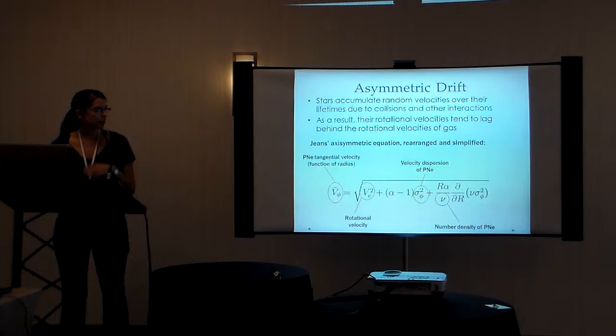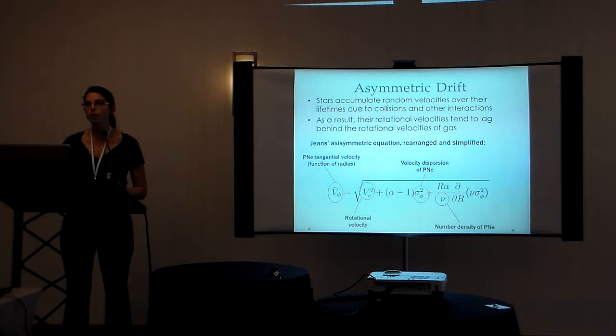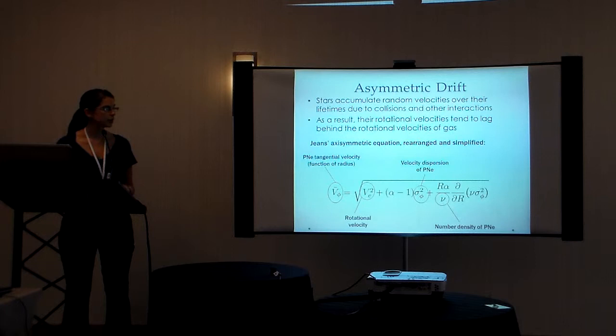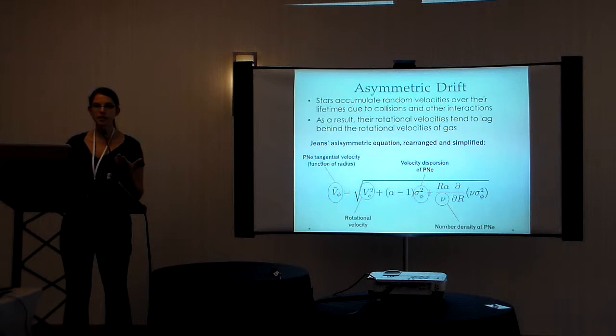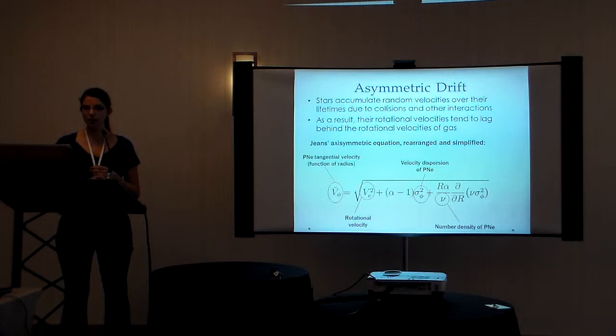As you can see from this equation, in order to calculate the tangential velocity of the planetary nebulae in our study, we need to know not only the rotational velocity of the galaxy, but also the velocity dispersion and the number density profiles of the planetary nebulae. For the rotational velocity, we use the gaseous rotation curve that I showed earlier. The gas isn't affected by collisions the way the stars in a galaxy are, so it's a good indication of the rotation of the galaxy. And then we can calculate the velocity dispersion and the number density profiles directly from our original velocity fields from the planetary nebulae.